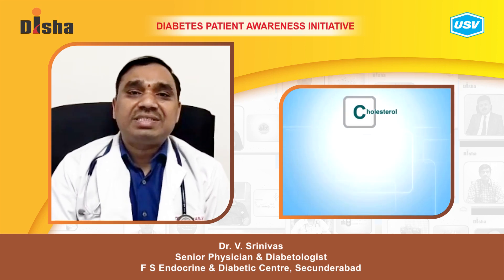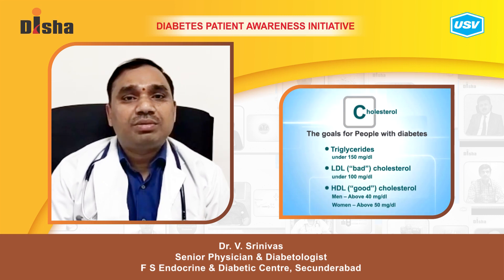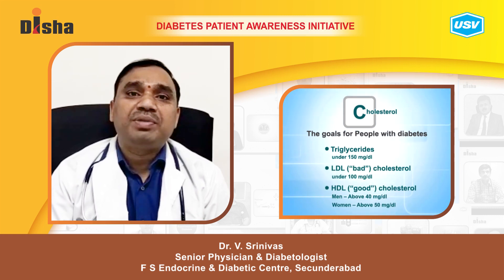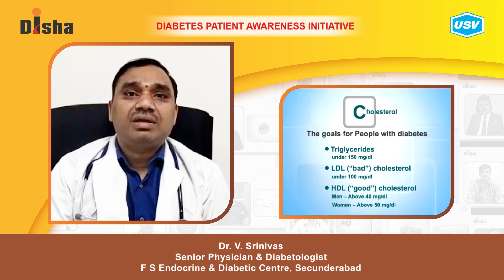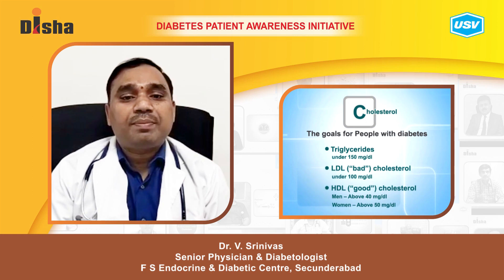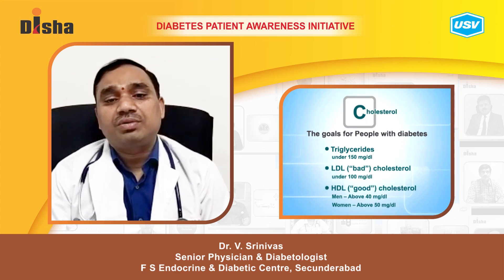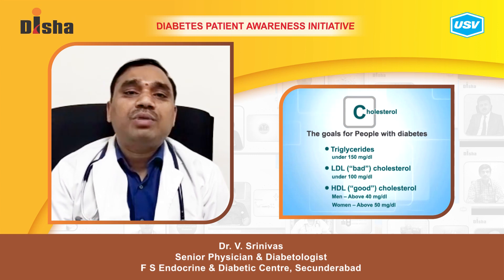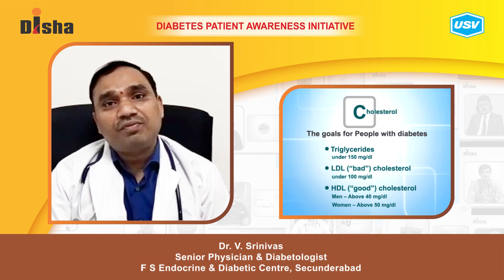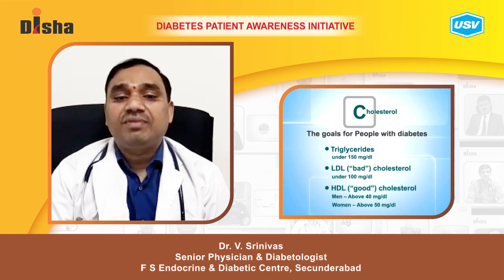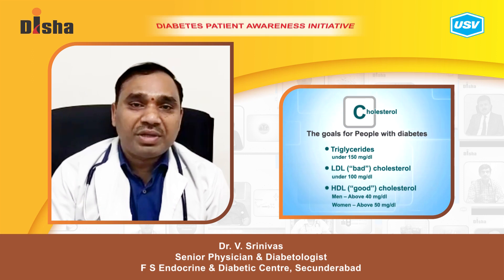The next parameter is 'C' — cholesterol. Cholesterol is an important parameter, most important amongst all, which will prevent cardiovascular and serious complications. LDL cholesterol is the bad cholesterol; HDL cholesterol is the good cholesterol. Bad cholesterol in the form of LDL should be less than 100. HDL cholesterol should be more than 40 in men and more than 50 in females. Triglycerides should be less than 150 in the overall population.